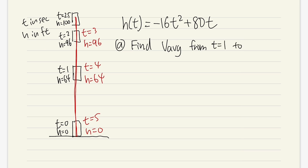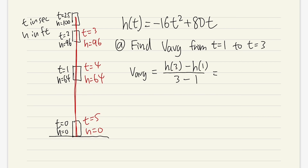Let's say t is equal to 1 to t is equal to 3. For finding the average velocity, it's just displacement, which is the change in position over the change in time. So we will have to know the final position — that's when we plug in 3 into h, giving us h(3) — and then minus the initial position, which is h(1), all over 3 minus 1, because that gives us the change in time. Plugging in 3 gives us h(3) = 96.